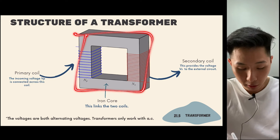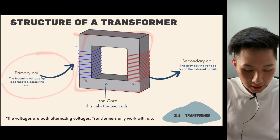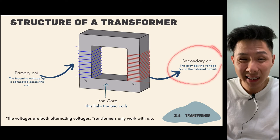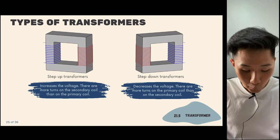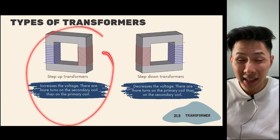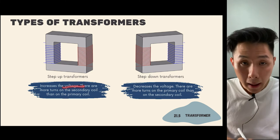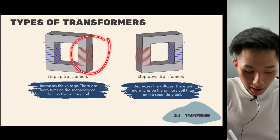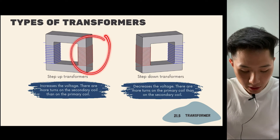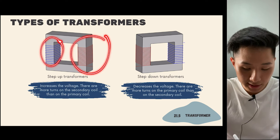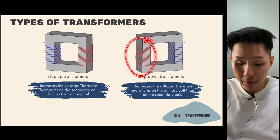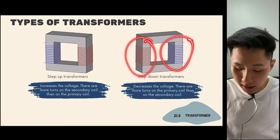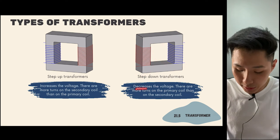A transformer has a primary coil and a secondary coil — both are coils of wire — linked by an iron core. For a step-up transformer, the secondary coil has more turns than the primary coil, increasing the voltage. A step-down transformer has more turns on the primary coil than the secondary, and its purpose is to decrease the voltage.